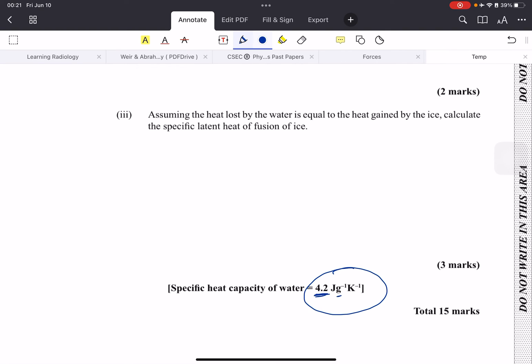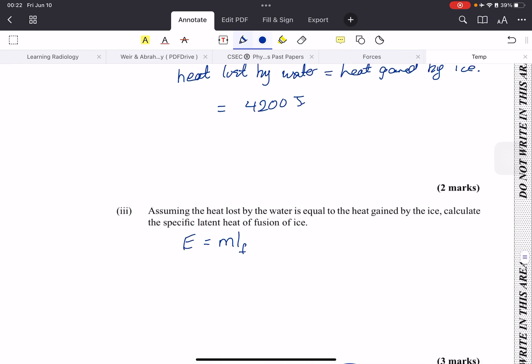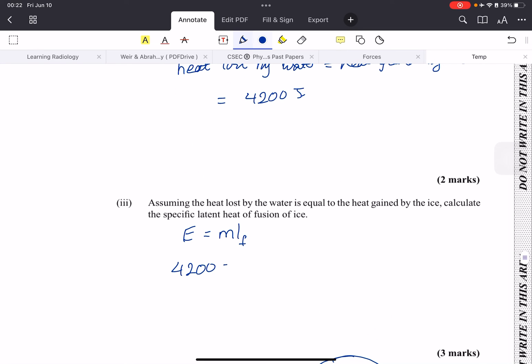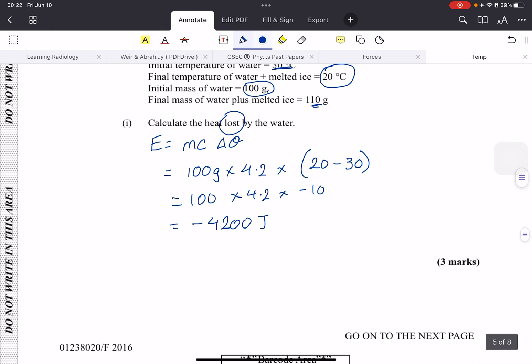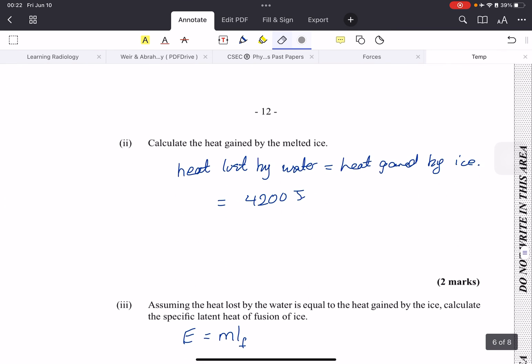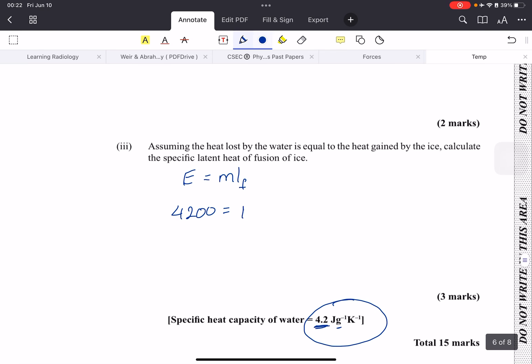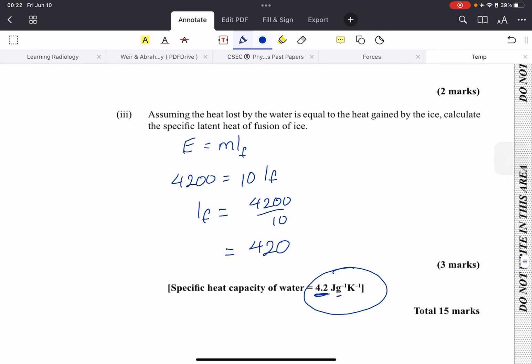The formula is E equals m L_f. It's fusion, right? So we have the energy, which is 4200. We have the mass, which is 10 grams, because after they added the melted ice it went from 100 grams to 110, so the amount of ice was just 10. And then we have the L_f. So to make L_f the subject of the formula, we just divide by 10. So L_f is 4200 divided by 10, and we will get 420. This is the latent heat of fusion.